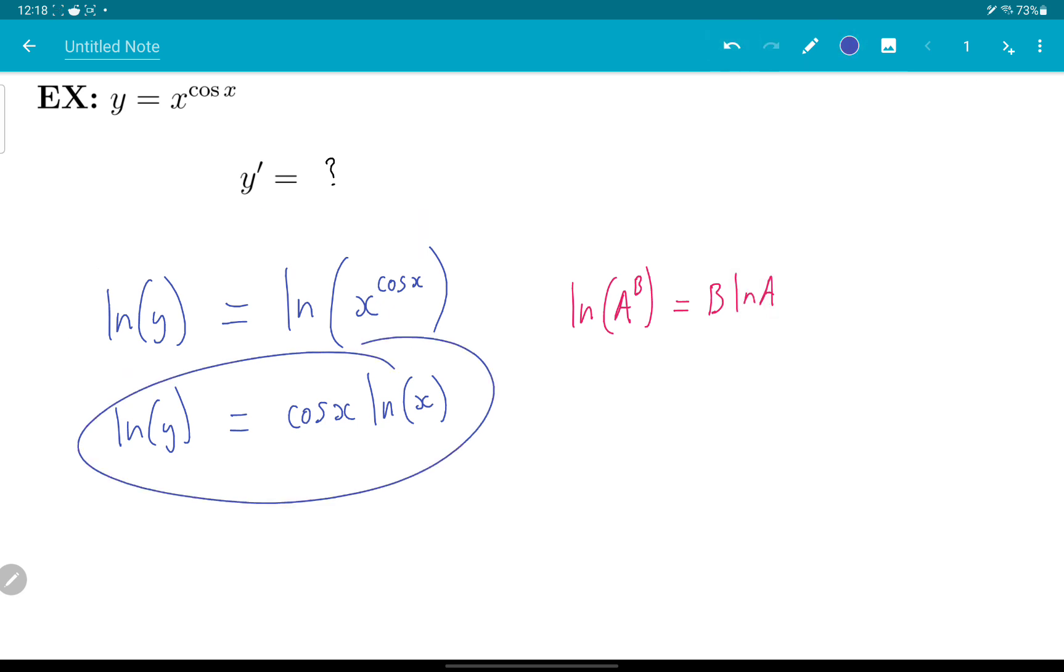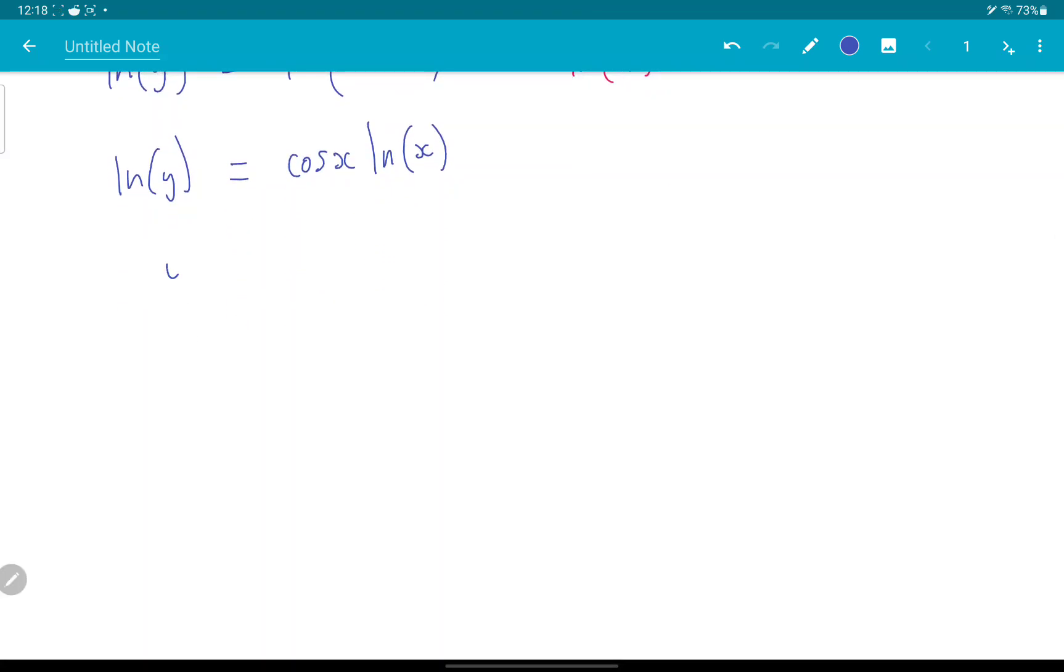Okay, so here I can do a derivative of both sides. On the left I get y prime over y. And on the right I have a product rule. So I get minus sin x, which is the derivative of cos x, times ln x, plus cos x times the derivative of ln x, like so.